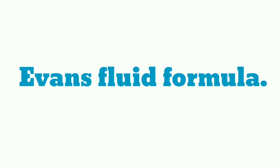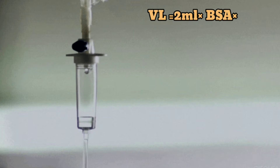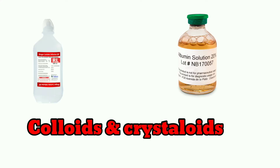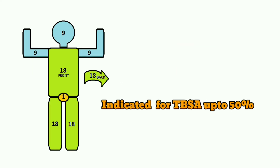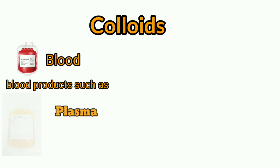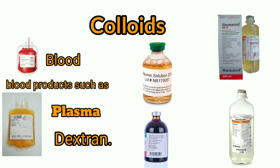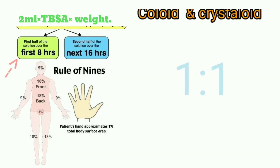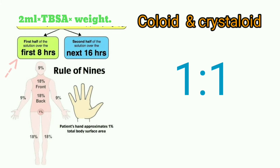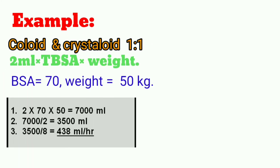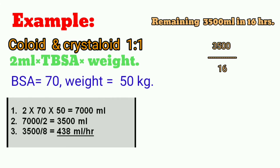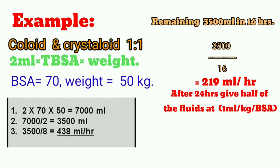The Evans formula is quite similar to the Parkland's formula but uses a different calculation: volume of fluid = 2 mL × %BSA × weight of patient. Both crystalloids and colloids are used in a 1:1 ratio, and it is indicated for total body surface area burns up to 50%. Colloids may include blood and blood products, plasma, albumin, dextrans, Haemaccel, and Gelofusine. Crystalloids include normal saline, Hartmann's solution, and Ringer's lactate. Add 2 liters of 5% dextrose for insensible losses. Half the fluid is given for the first eight hours since the burn, and the rest over the next 16 hours. After 24 hours, give half the fluids at 1 mL/kg per %BSA plus 2 liters of 5% dextrose.